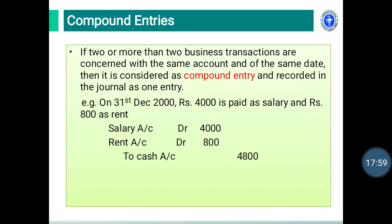Compound entry. If two or more business transactions are concerned with the same account and are of the same date, it is considered a compound entry and recorded in the journal as one entry. For example, on 31st December 2000, Rs.4000 is paid as salary and Rs.800 as rent. Both salary and rent accounts are debited, the cash account is credited, and the total — the sum of salary and rent — is mentioned in the cash account.